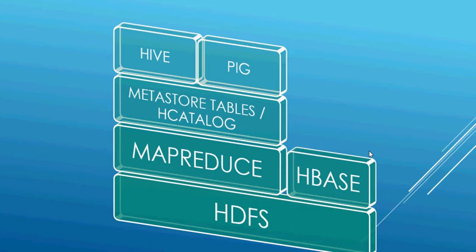HDFS is a distributed file system designed to provide high throughput access to data. It creates multiple replicas of each data block and distributes them on computers throughout the cluster to enable reliable and rapid access. In the next slide, we are going to talk about the main components of HDFS.